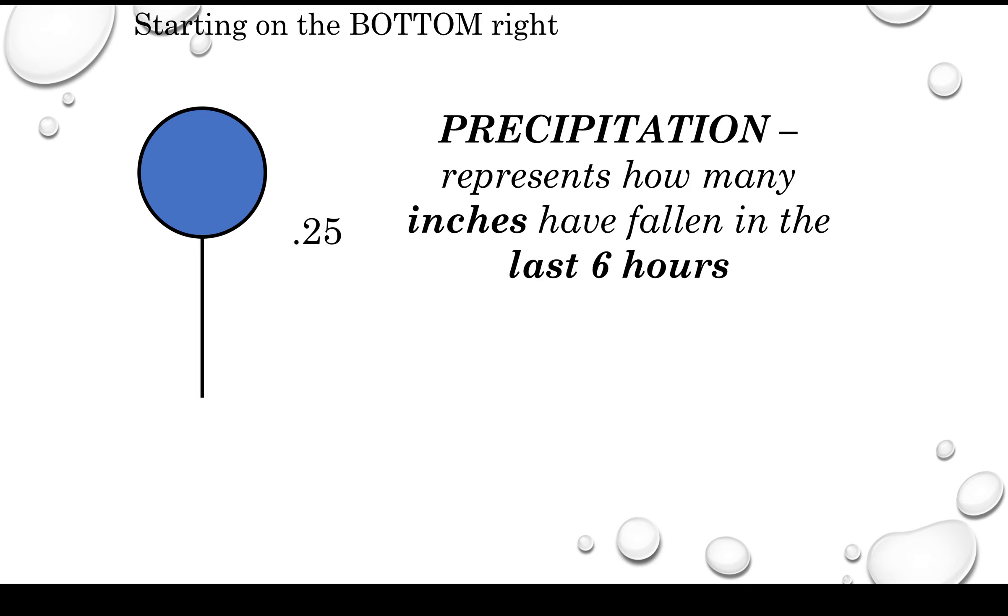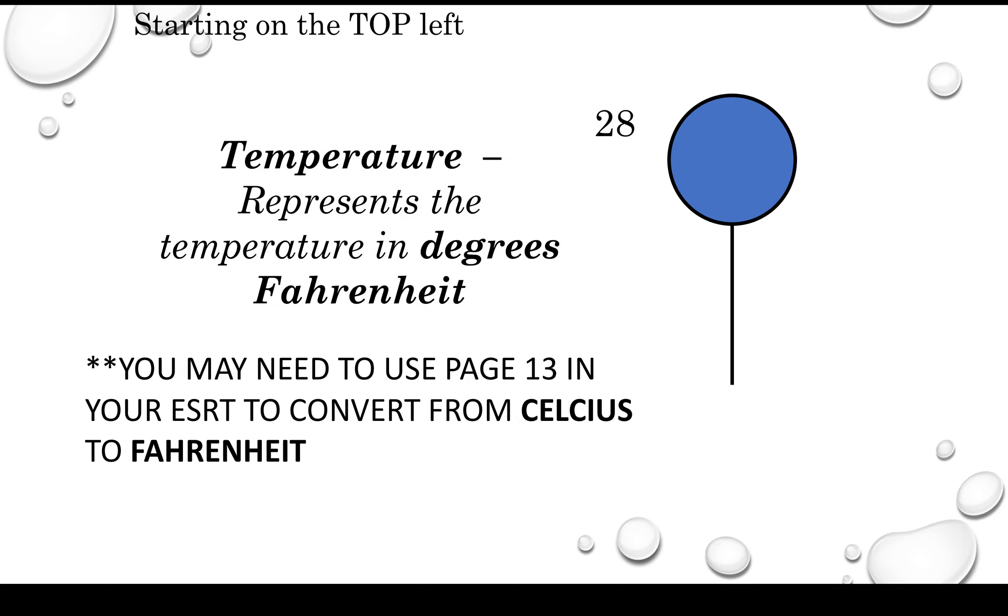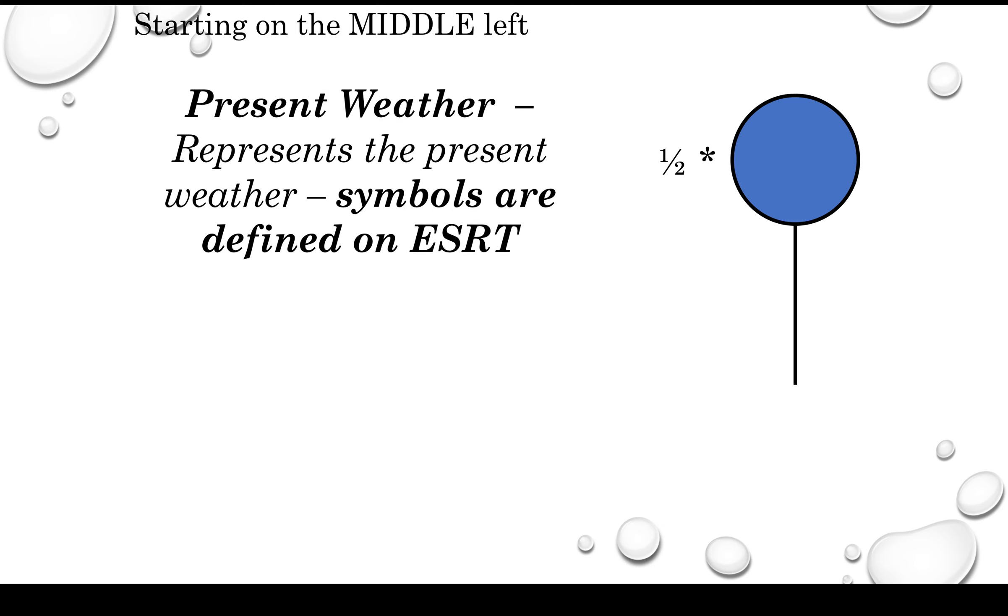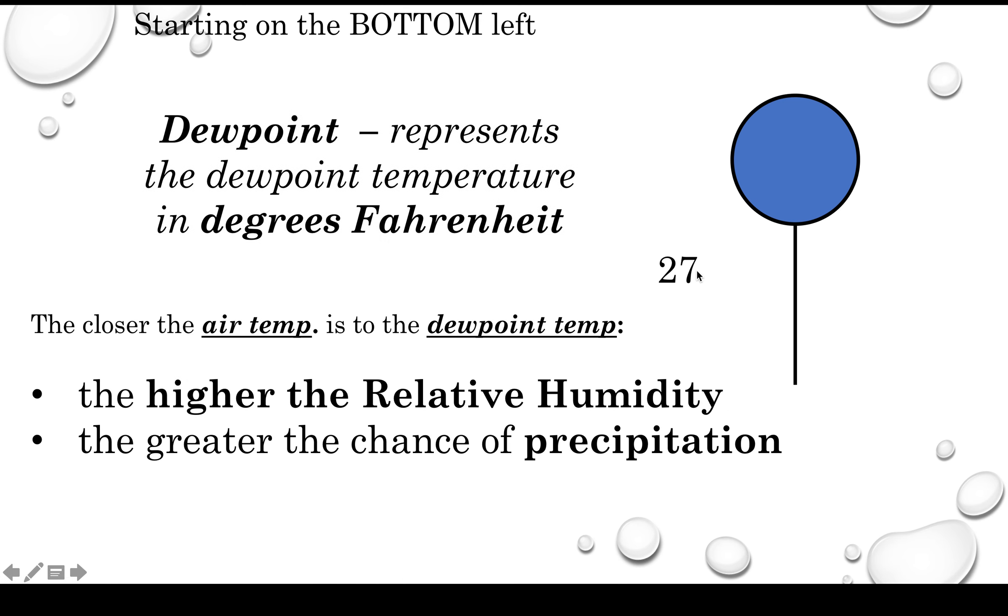A couple other things we have: on the bottom right, precipitation—that's the amount of precipitation in the last six hours. Top left is temperature, and that's in degrees Fahrenheit. Middle left you have present weather; this would be snow. And visibility is in miles, so a half mile—we can see a half mile and it's snowing.